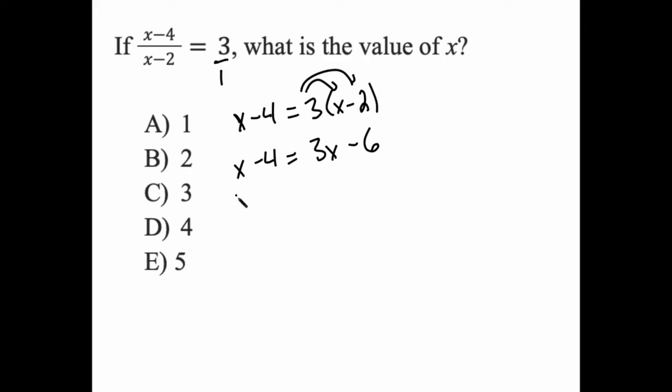Alright, now I'm going to combine like terms and be done with this. Subtract x from both sides, add 6 to both sides, and what I end up with is 2 is equal to 2x. Divide both sides by 2, and I find that x equals 1.